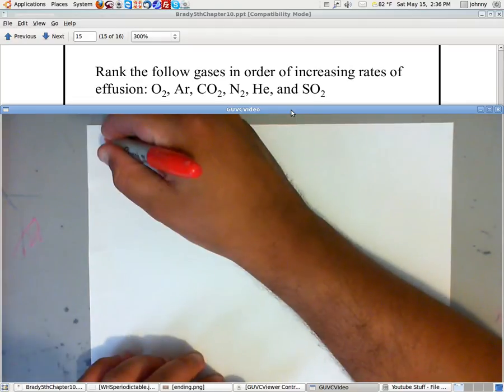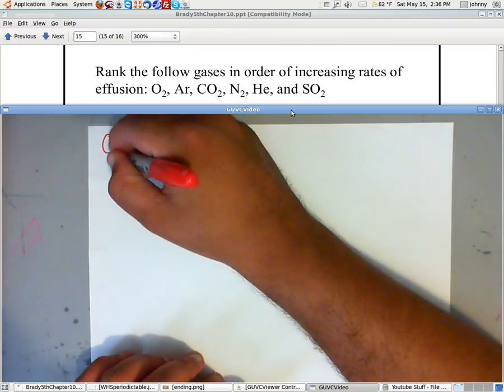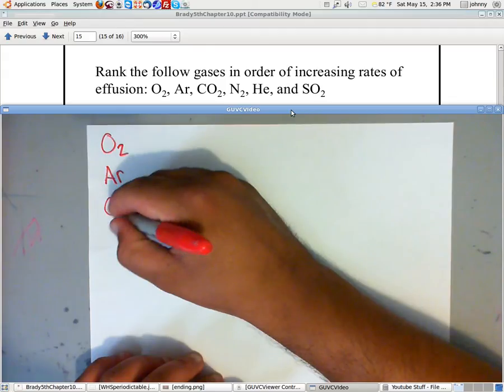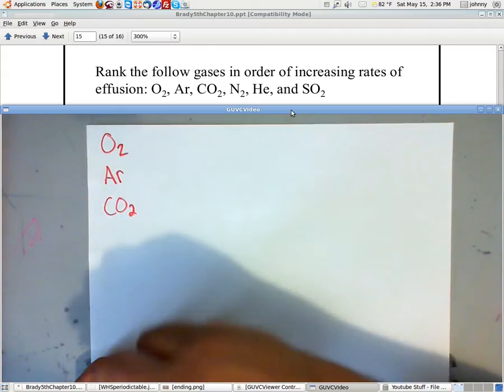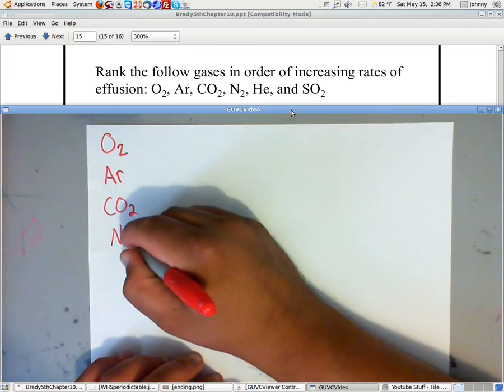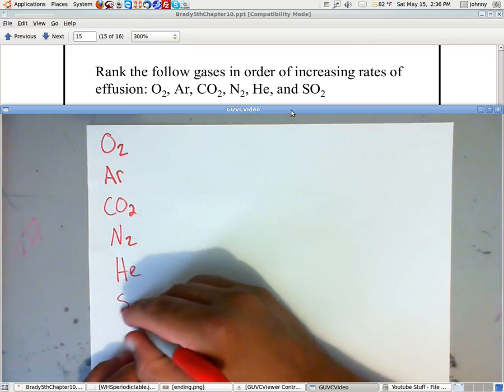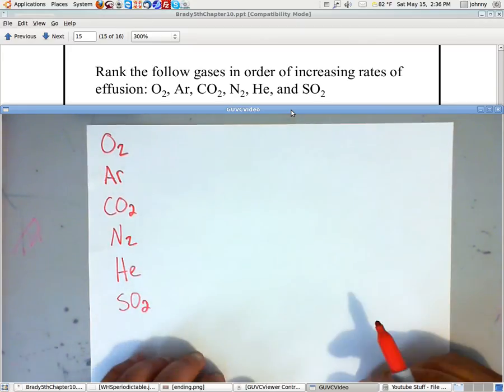So let's make a list. We have O2, we have argon, we have CO2, we have N2, we have He, and we have SO2. These are our following gases.